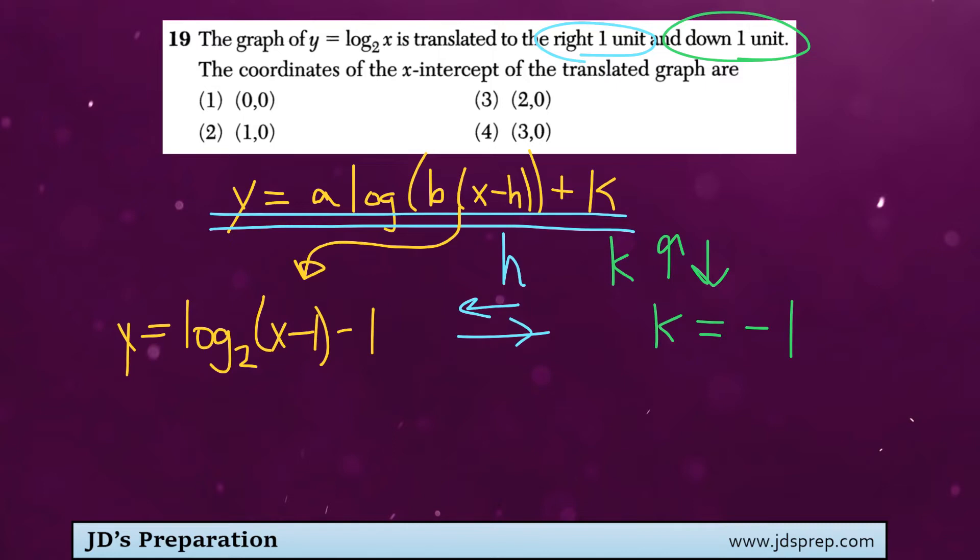Now, because we're looking for the coordinates of the x-intercept, that means at the x-intercept we have a y value of 0.